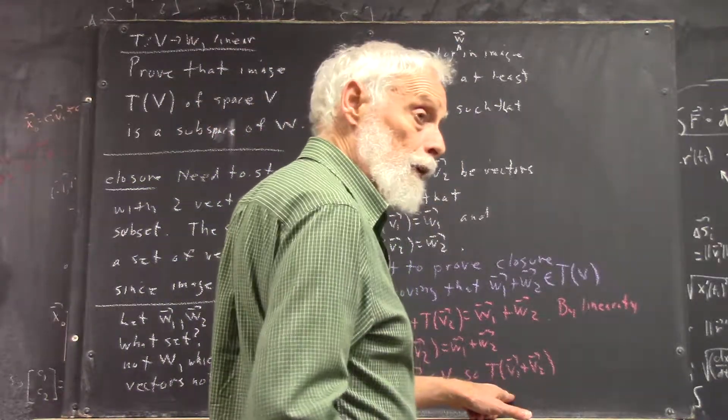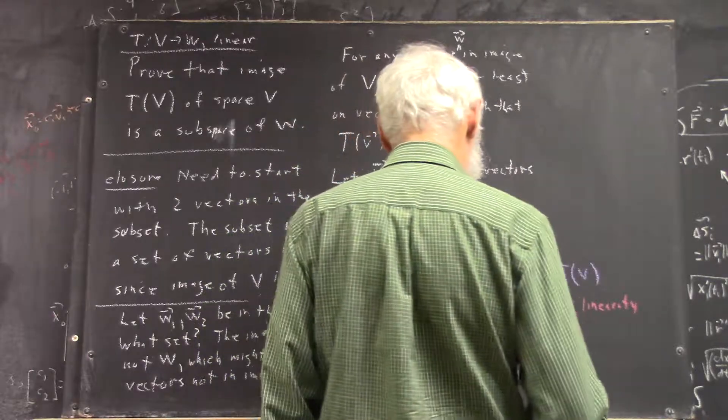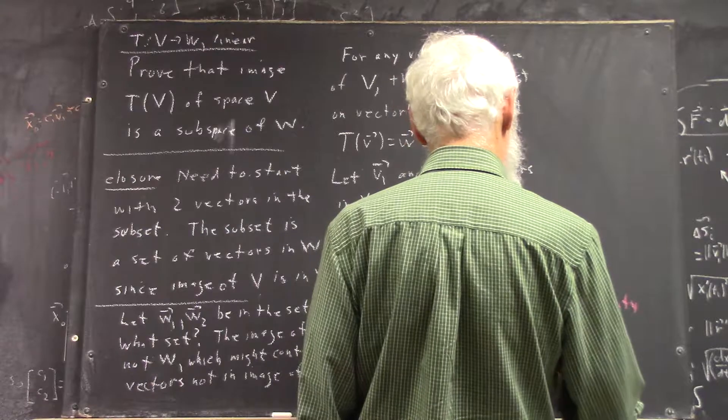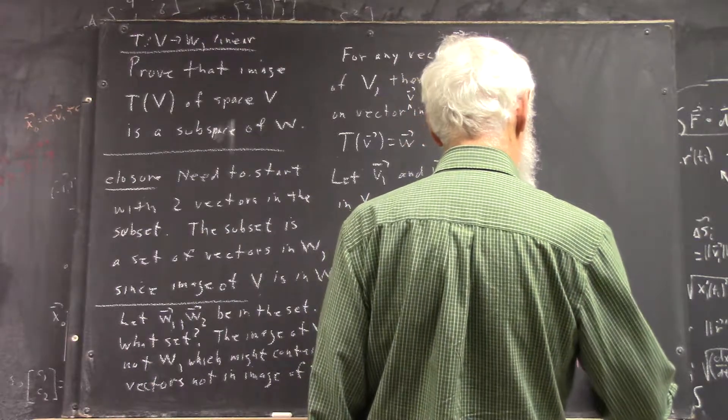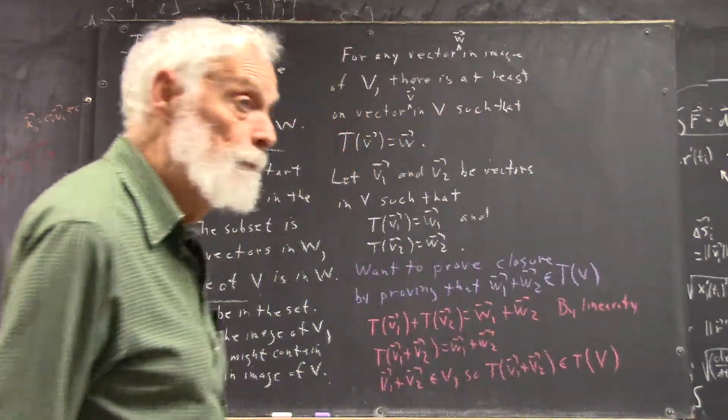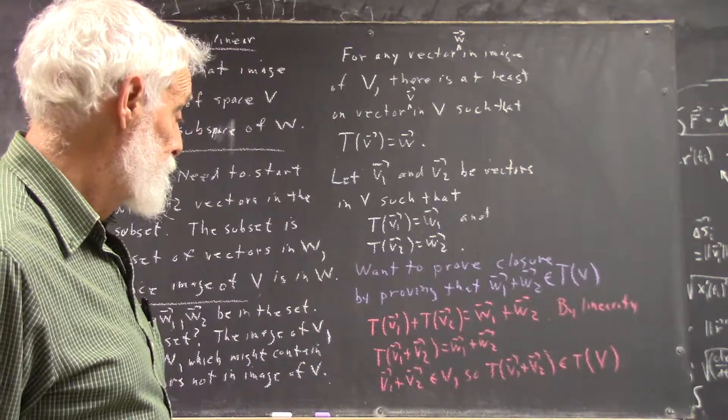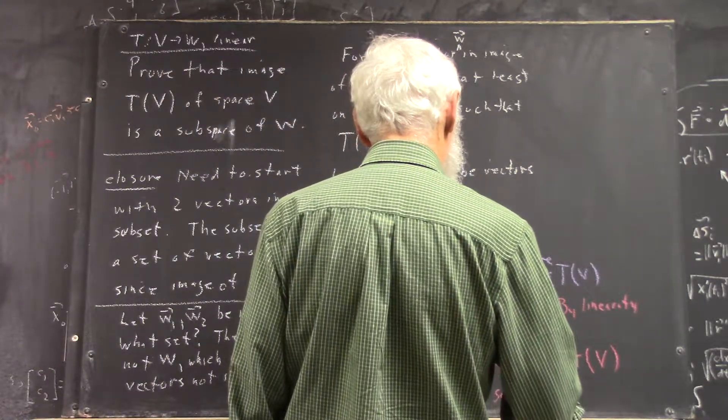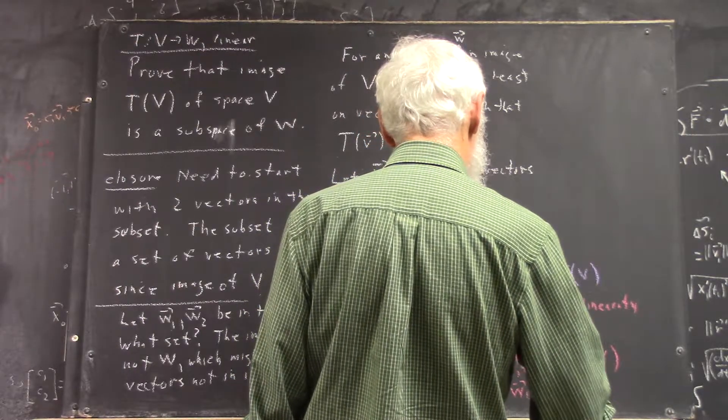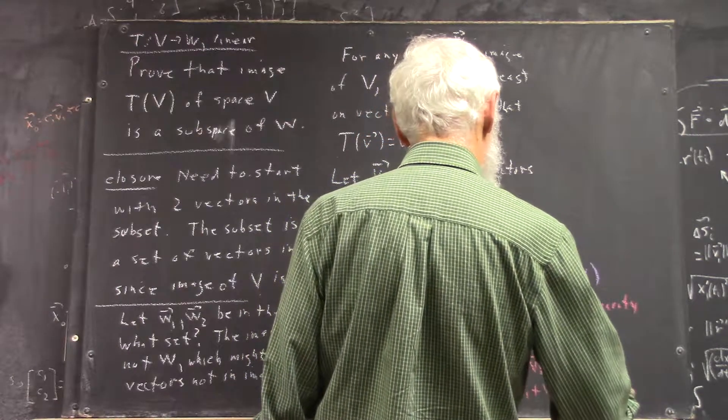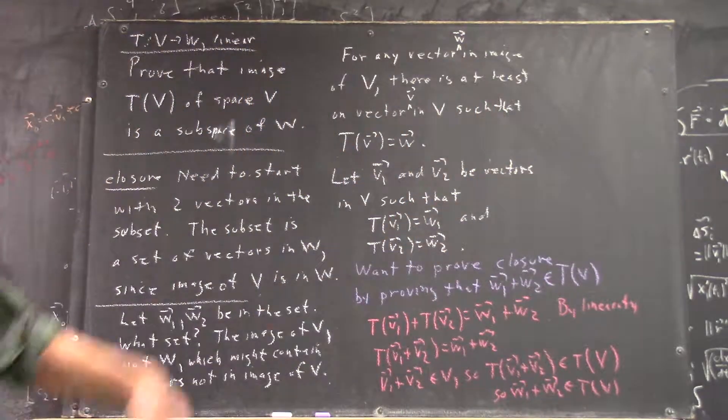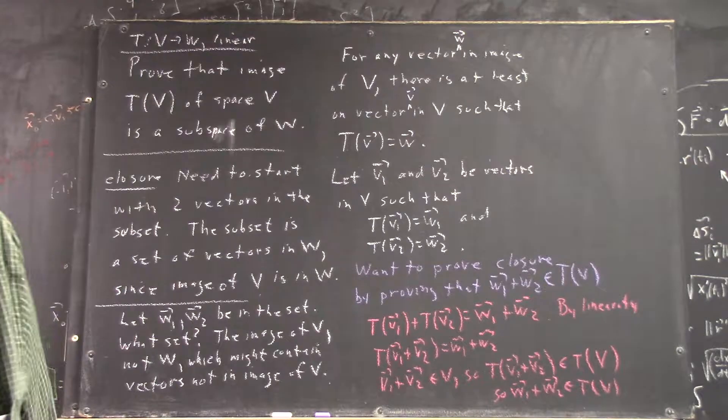It follows that T of V1 plus V2 is in T of the vector space V. So, W1 plus W2 is in the image space T of V. Okay?